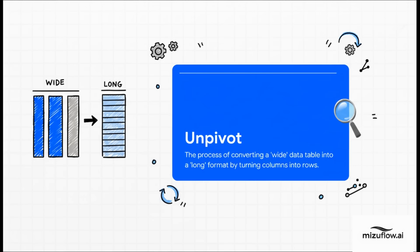The magic trick is a little something called unpivot. It's a feature inside Power Query, and it is a total game changer. You basically just tell it to take all those month columns and — poof — it turns them into nice, neat rows, perfectly prepped for our data model.